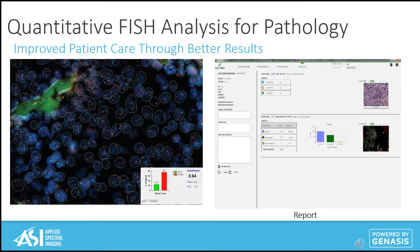By purchasing from ASI, you're selecting a platform designed to scale with your organization as you expand testing capabilities and volume output. By partnering with ASI, your organization can allow employees to safely work from home, hire, train, or validate out-of-state employees using Genesis Anywhere. And by collaborating with ASI, all of your case data is stored in one centralized location where you can monitor the status of individual cases, as well as measure key performance indicators to make informed business decisions.